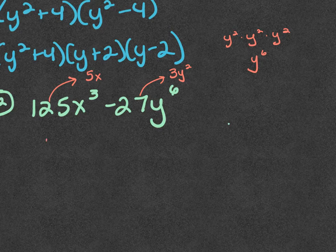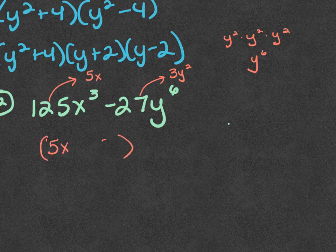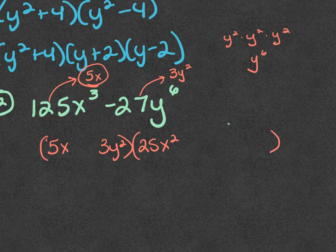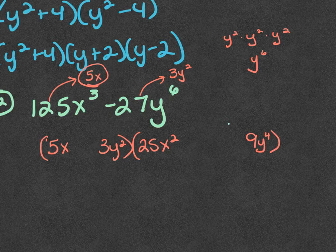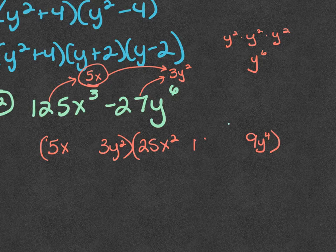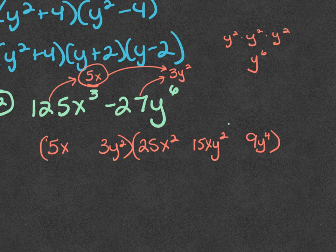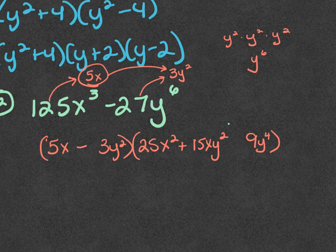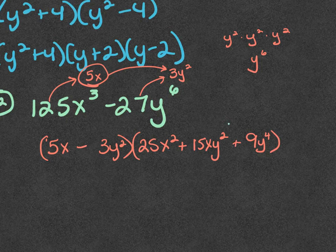Now the first set of parentheses is those two terms, 5x and 3y squared. Second set of parentheses, we square the first term which is 25x squared. We square the last one which is 9y to the fourth and then we multiply the two together. Five times three is 15xy squared and then the signs are remember soap. Same which would be a minus. Opposite which is plus. Positive which is plus. And then that's what your answer should have been.